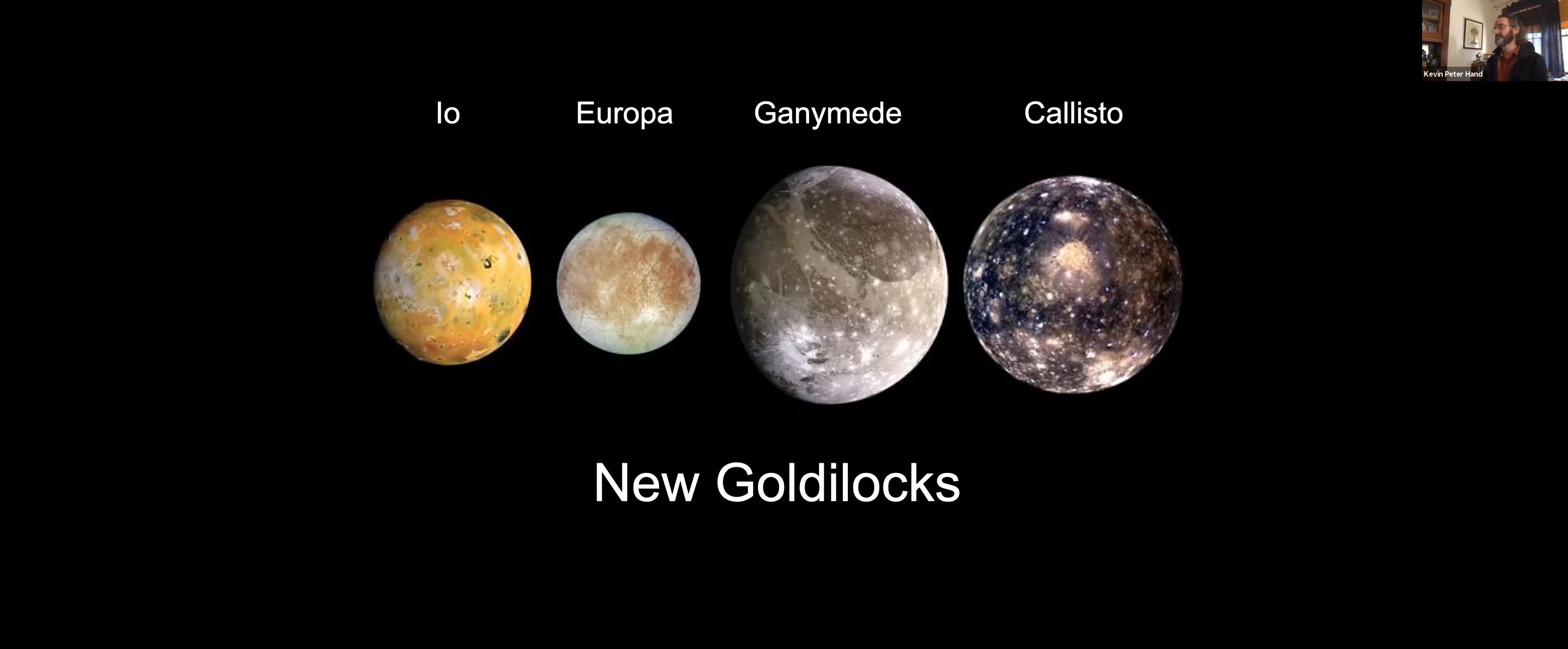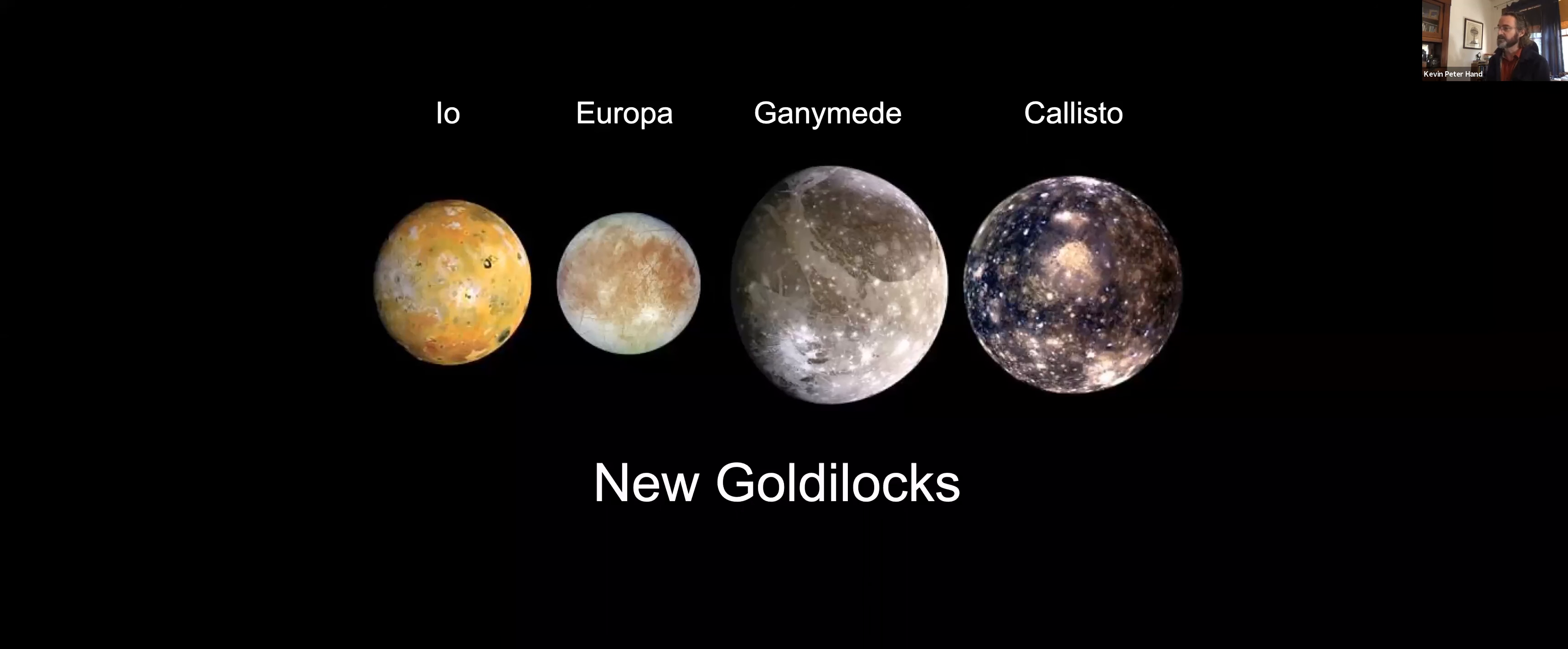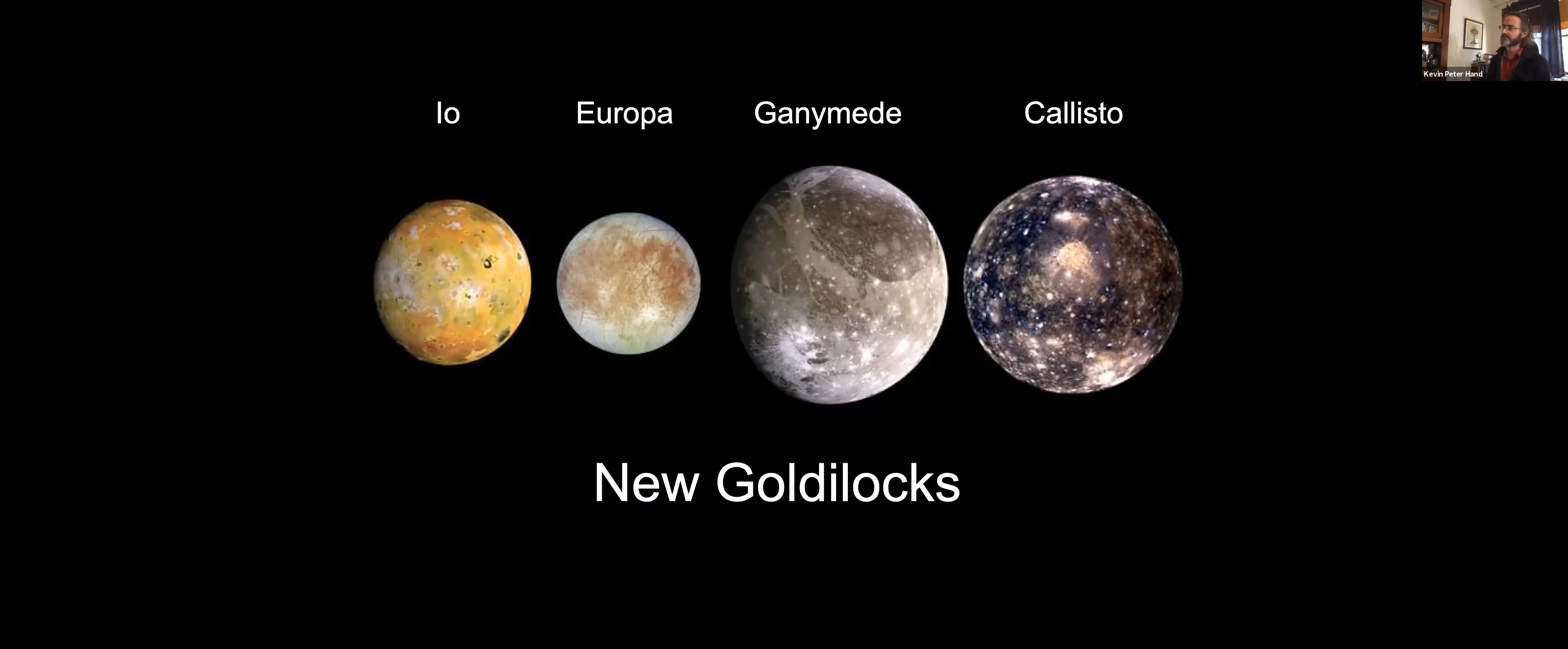Meanwhile, Callisto might be sort of the analog to Mars. Callisto, we think, may have a subsurface liquid water ocean, but there are a lot of question marks about exactly what's happening in the interior of Callisto. If it's got tidal energy dissipation, it's just a whiff of tidal energy dissipation. There may be significant radiogenic decay so as to maintain a liquid water layer. But if nothing else, Callisto's liquid water ocean, were it to exist, is trapped beneath a very thick and old ice shell.